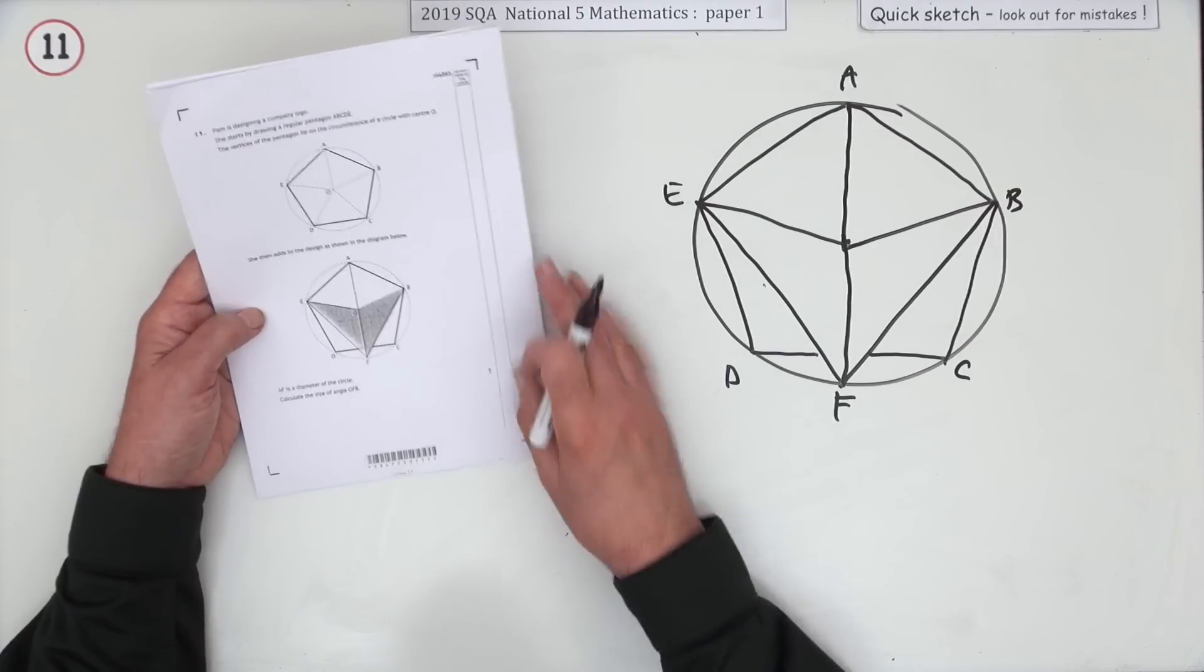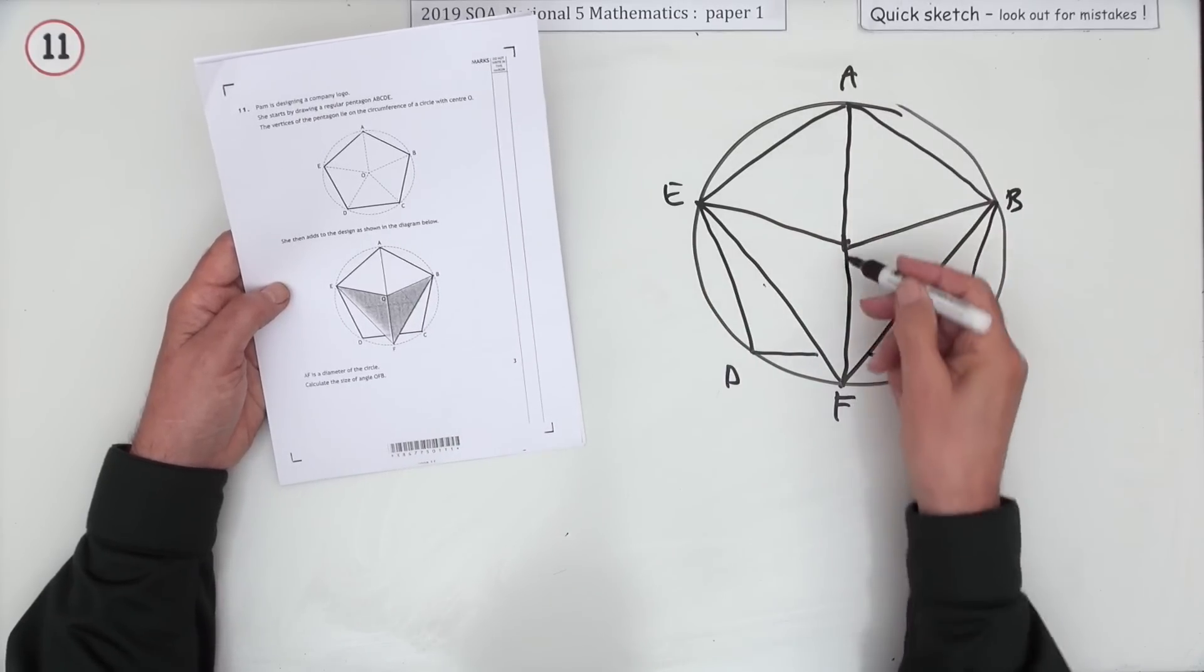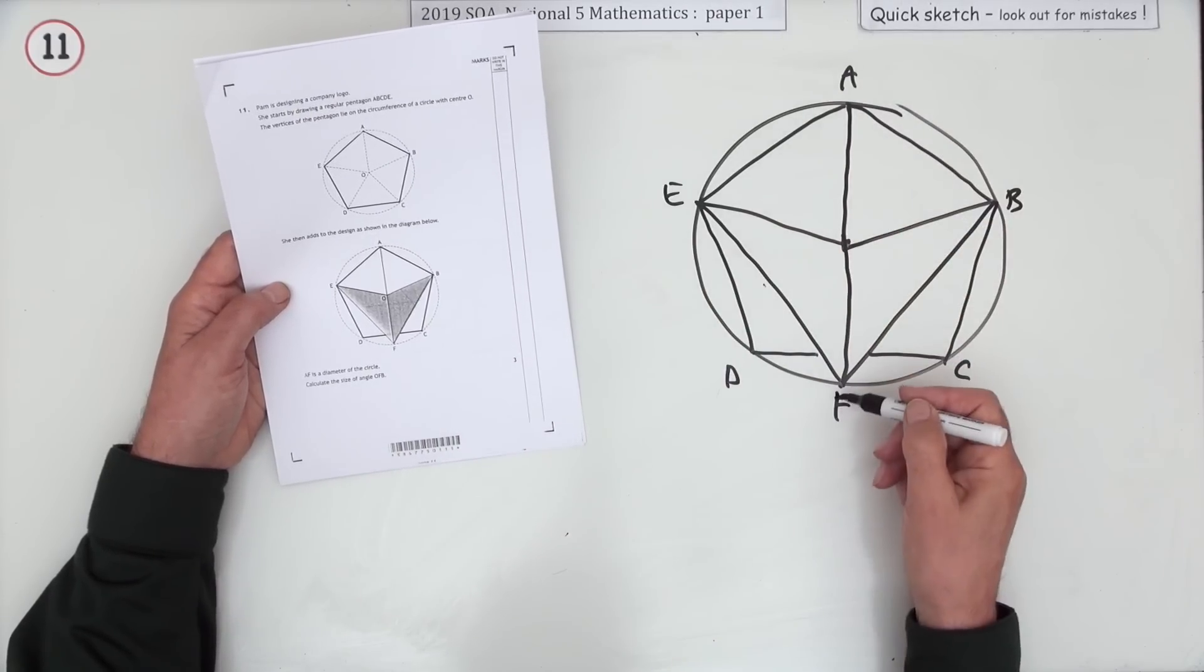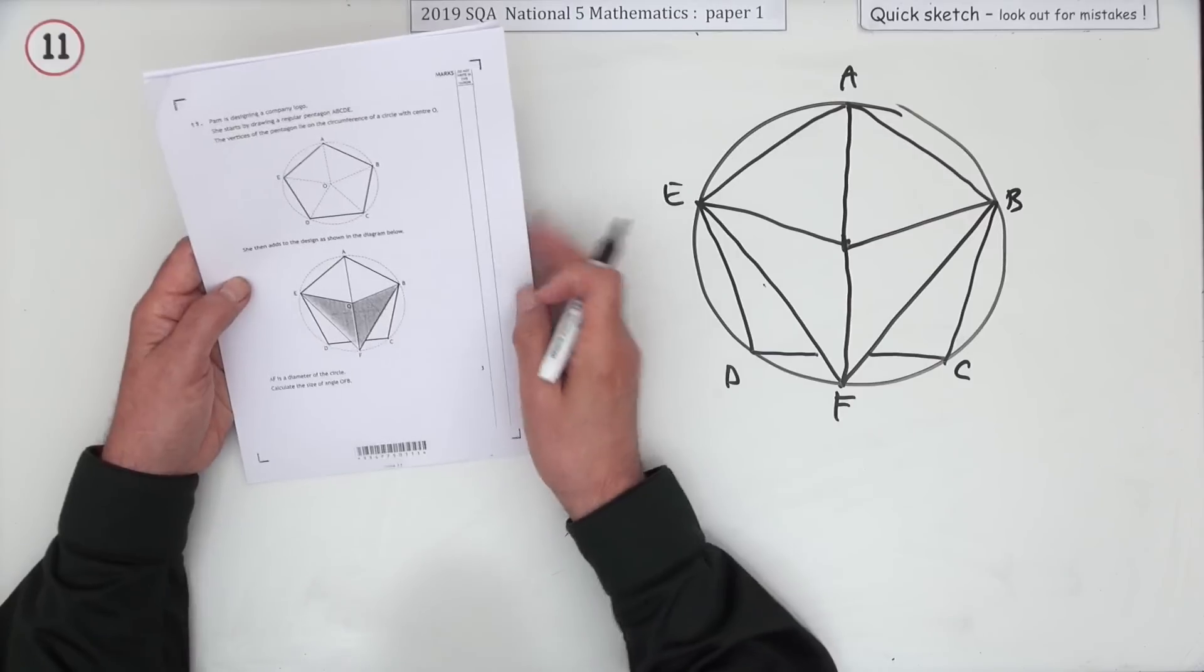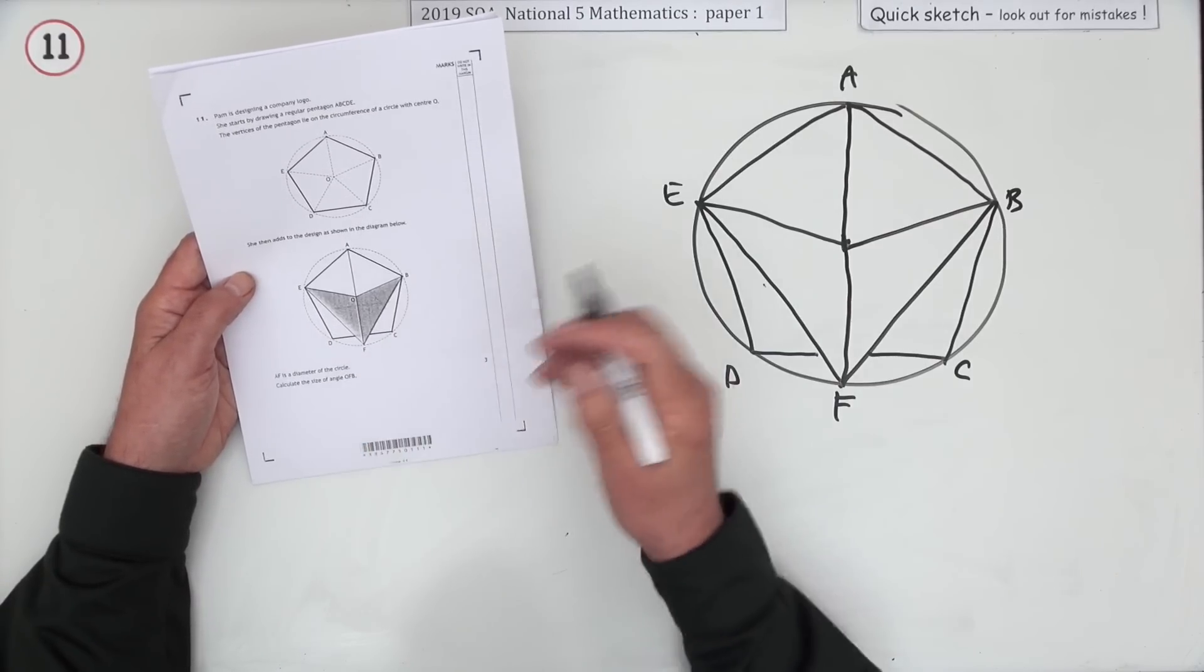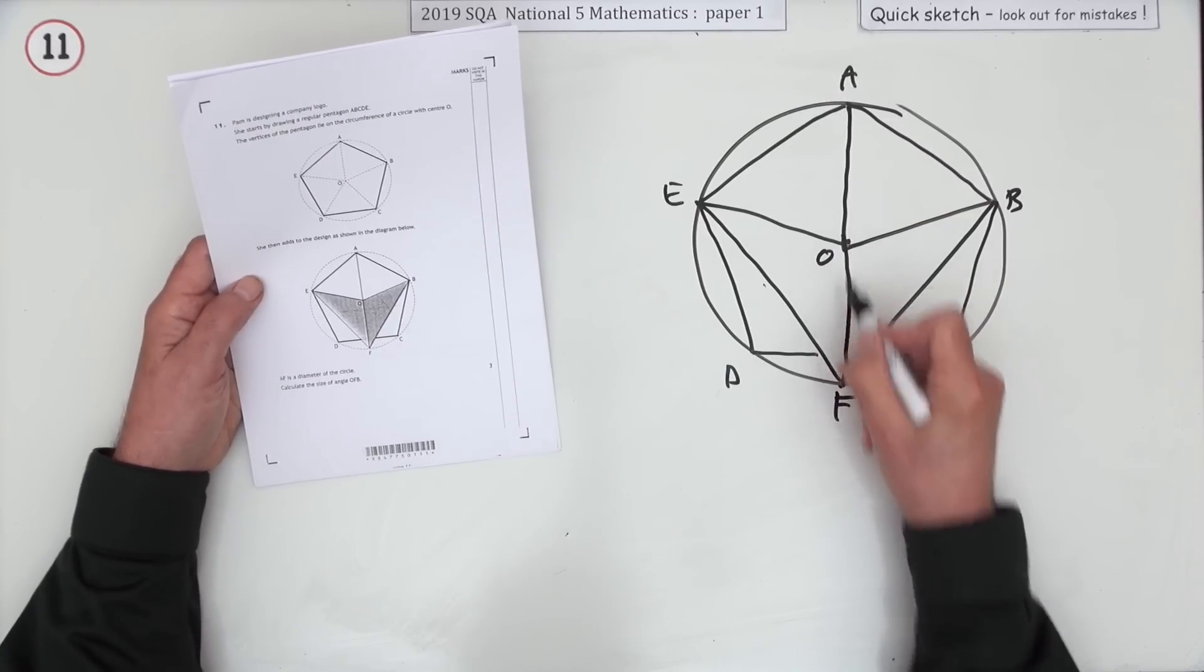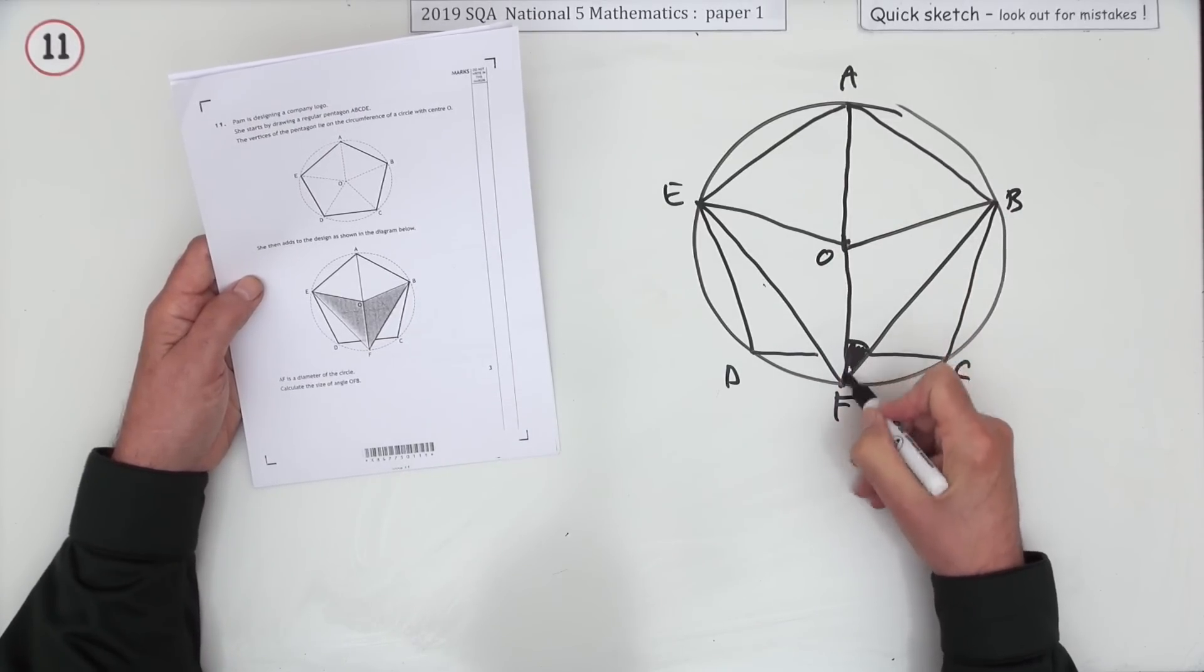AF is a diameter. It goes through the center from one point in the circumference to its diametrically opposite point. Now it says calculate the size of angle OFB. That's all you want to know, OFB over the center. This is the angle you want here.